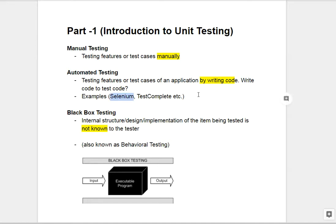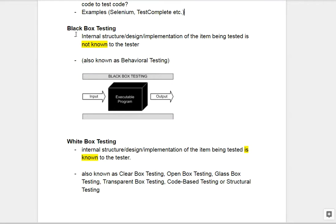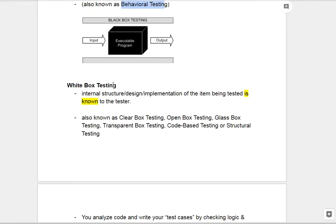Two examples of tools for UI automation testing are Selenium and TestComplete. There are two other categories of testing: black box testing and white box testing. Black box testing means a tester does not know what is inside the functionality. You don't know the internal structure, design, implementation, or logic — you just know the input and expected output. You give different inputs and see if the expected outputs come or not. This is also called behavioral testing.